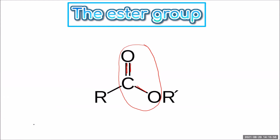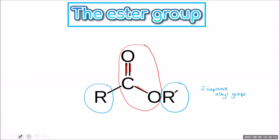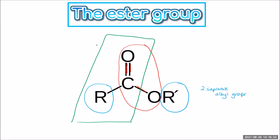You'll notice that the ester group links two separate alcohol groups. One of these comes from the carboxylic acid that's used to form it — so this part of the ester comes from the carboxylic acid — and the remainder comes from an alcohol.